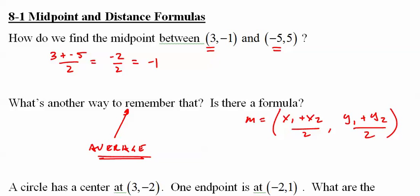So that's the first point. The other one, of course, is the y. We just go negative 1 plus 5 over 2 equals 4 over 2, which is 2. So the midpoint is negative 1 comma 2.